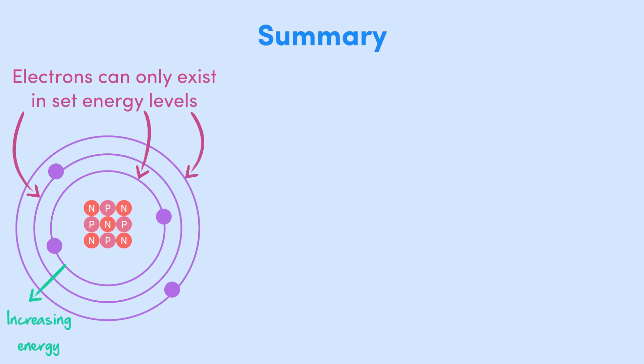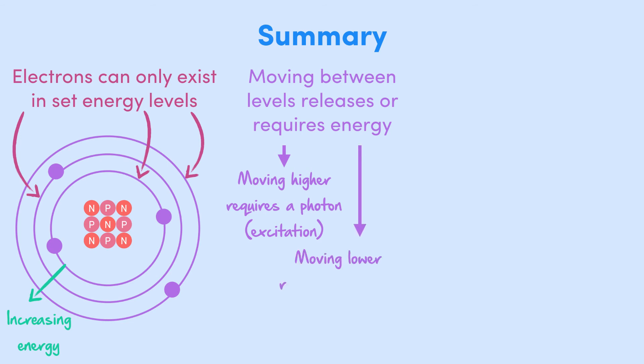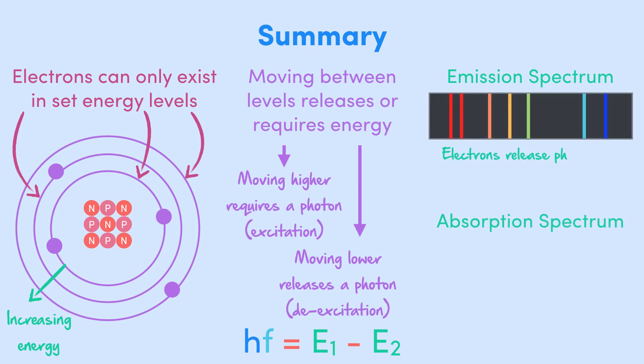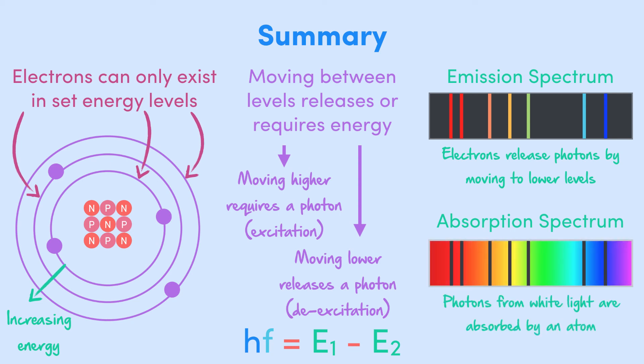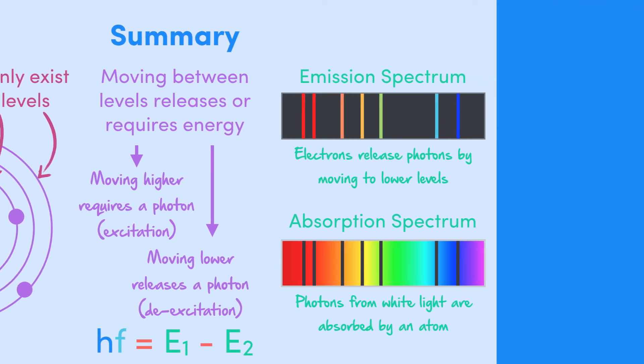And there you have it. In this video, we've looked at energy levels and line spectra. We saw that electrons in an atom can only exist at certain energy levels, which are kind of like the distances at which they can orbit the nucleus. Then, we saw that moving between levels will either release or require energy, in the form of a photon. Moving to a higher level, or excitation, requires energy. And moving to a lower level, or de-excitation, releases energy. And we have a formula telling us about this process: hf equals E1 minus E2. Finally, we looked at emission and absorption spectra. The former being the photons we see when lots of electrons move to lower levels in the atom. And the latter being the spectrum we see when some photons from white light are absorbed by an atom. Thanks for watching guys. See you next time.